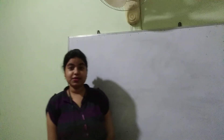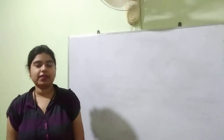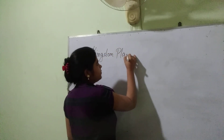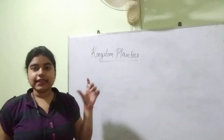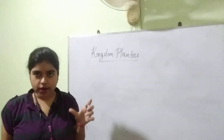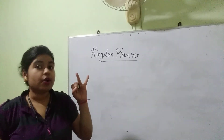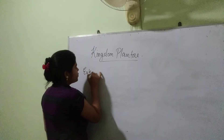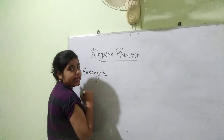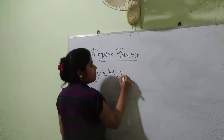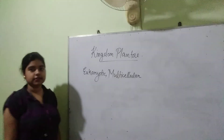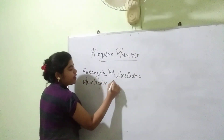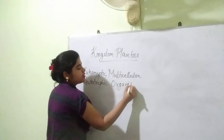We will be discussing the most awaited kingdom: Kingdom Plantae. This kingdom includes all those organisms which are eukaryotic, multicellular, and autotrophic. Organisms that are eukaryotic, multicellular, and autotrophic come under Kingdom Plantae.